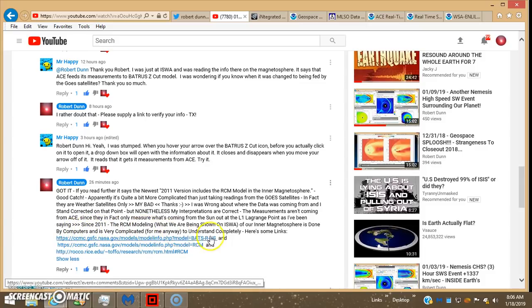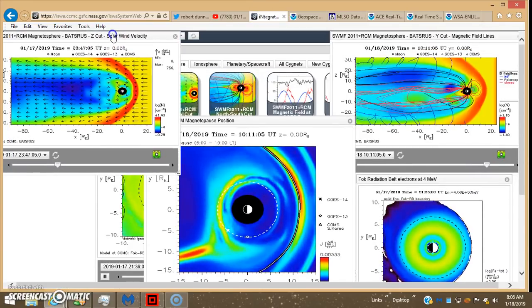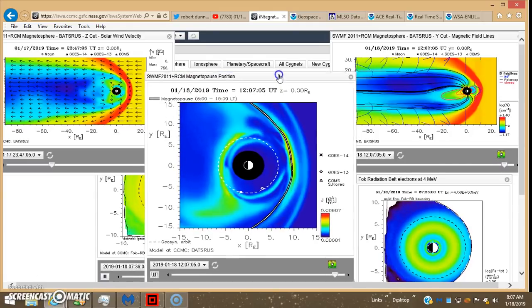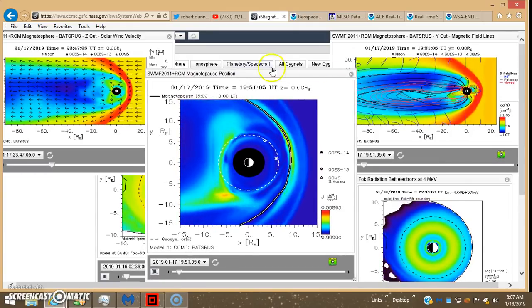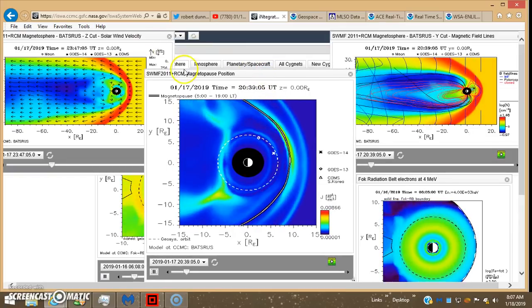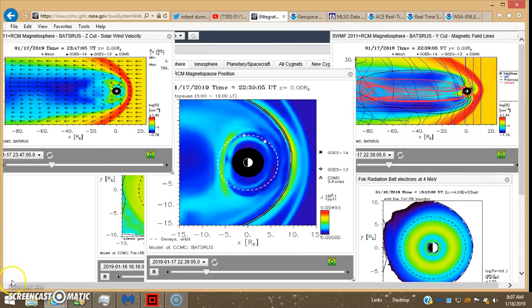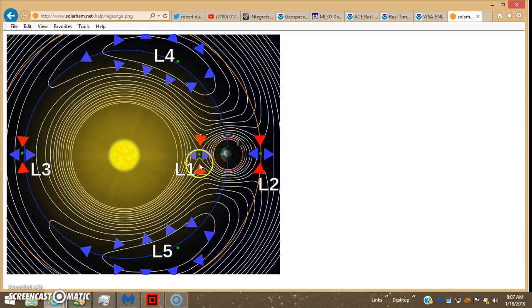Since 2011 the RCM modeling - what we are being shown on ISWA of our inner magnetosphere is done by computers and it's very complicated for me anyway to understand completely. But here's some of the links so you can go in there and click on those links if you want. But basically it's still the same deal - the solar wind speed and everything's being measured inside the inner magnetosphere, it's coming from this RCM modeling and it's not coming from ACE.